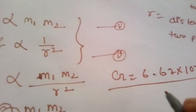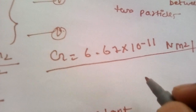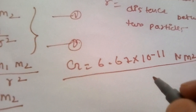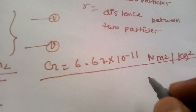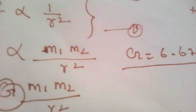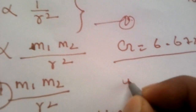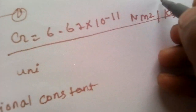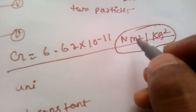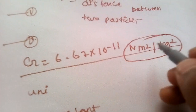This value is important for any competitive exam. After this, the value of G is 6.67 times 10 to the power negative 11. The unit of capital G is Newton meter squared per kilogram squared. Newton meter squared per kilogram squared is the unit of capital G.